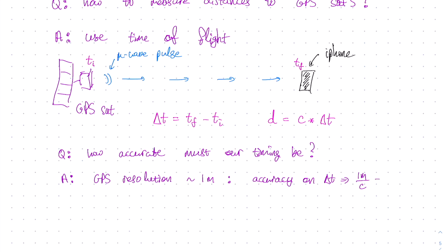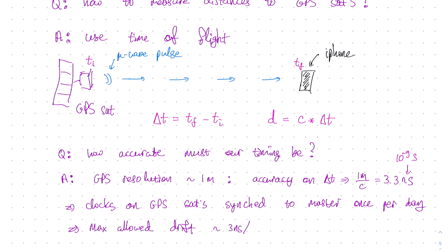Well, the answer to this question determines the accuracy on delta t that we need to achieve. So let's go ahead and calculate. We take 1 meter, divide it by the speed of light, and get the travel time for light to go 1 meter distance as 3.3 nanoseconds. And as a reminder, a nanosecond is 10 to minus 9 seconds. Now, clocks on GPS satellites are synchronized to a master clock down here on Earth approximately once per day. This means that the rate of drift of clocks on the GPS satellites must be less than about 3 nanoseconds per day, which is quite a precise clock.